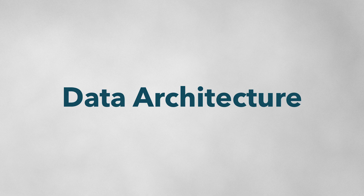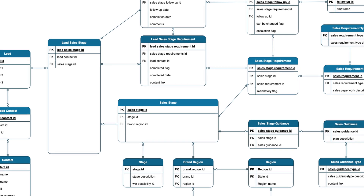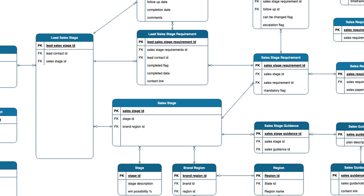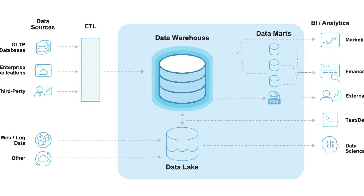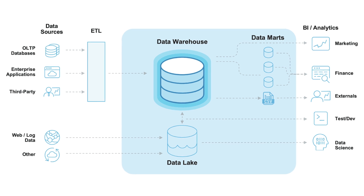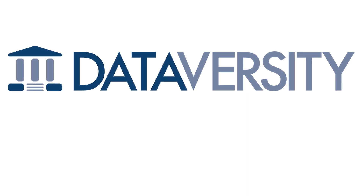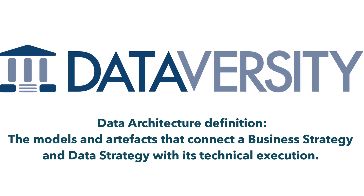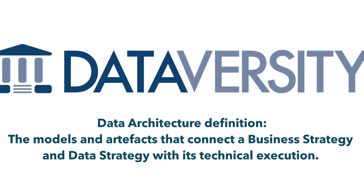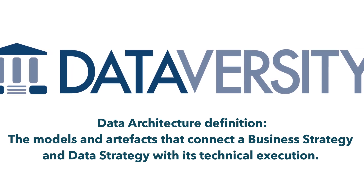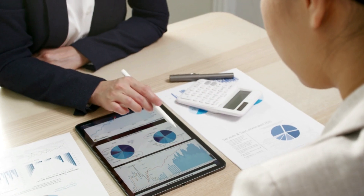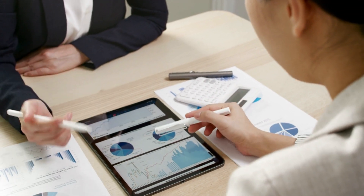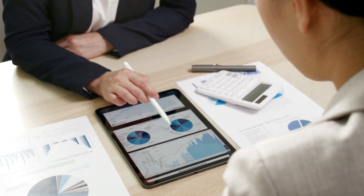Let's unpack the framework starting with data architecture. The scope of data architecture is to increase the quality of the data structure, to connect data and data sources, which enables data management and data governance. Dataversity describes data architecture as the models and artefacts that connect a business strategy and data strategy with its technical execution. Data architecture provides a foundation for people and systems to work with data most efficiently.